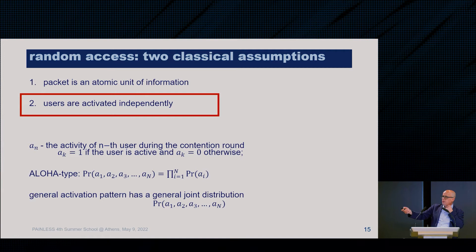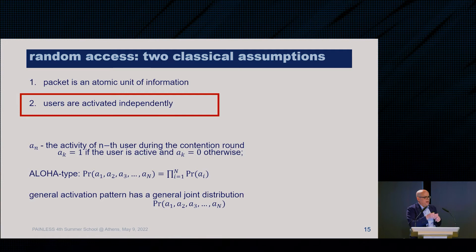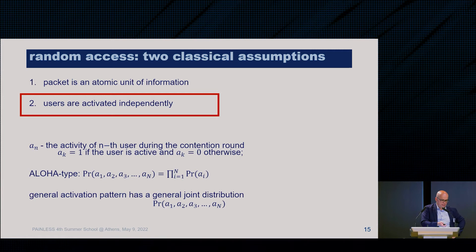The second classical assumption is that users are activated independently — each with a certain probability, and multiple activations are the product of individual probabilities. But in practice this may not hold: sensors observing the same field will be activated in a correlated way, a kind of batch activation where we activate subsets rather than individual users. This assumption has not been studied extensively.